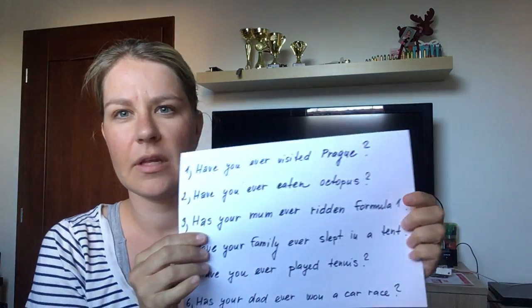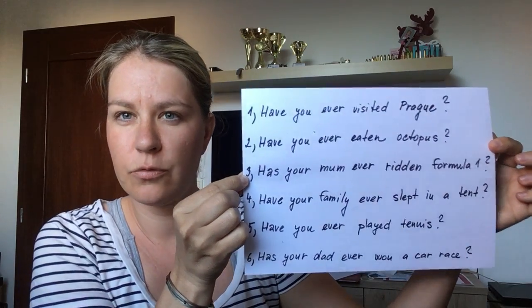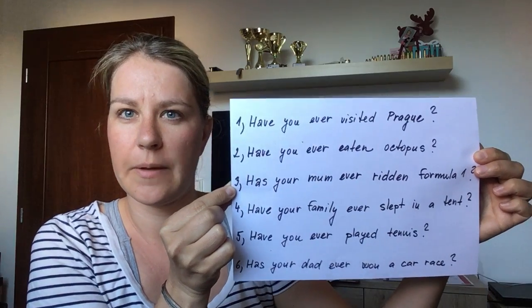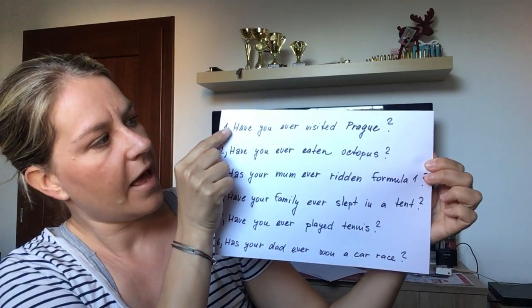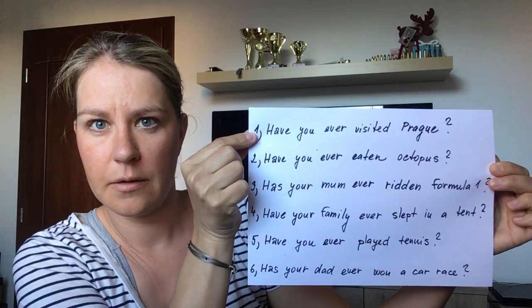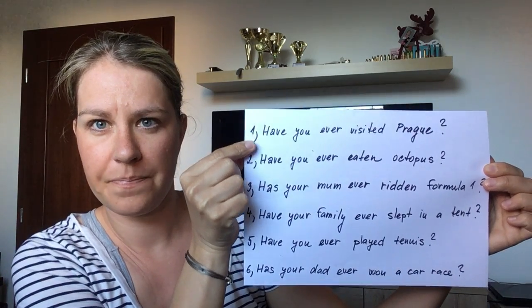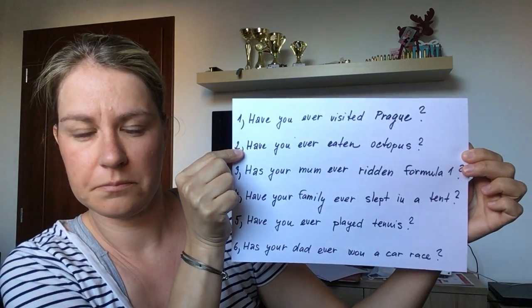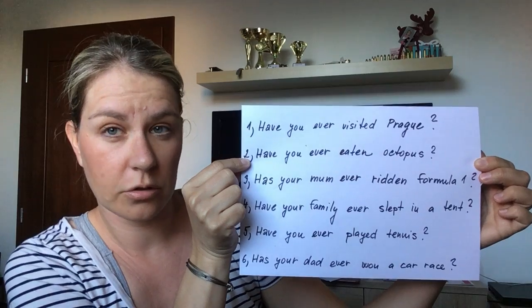Připravila jsem si pro vás šest otázek, které vám ukážu a přečtu, a vy na ně odpovíte podle vás — buď kladnou odpovědí, anebo zápornou za pomocí právě toho 'never'. Klidně si to teď stopněte, až vám ty věty přečtu, ať máte čas na odpovědi. The first one: Have you ever visited Prague? Have you ever eaten octopus? Kdo neví, co je octopus, najdete asi.